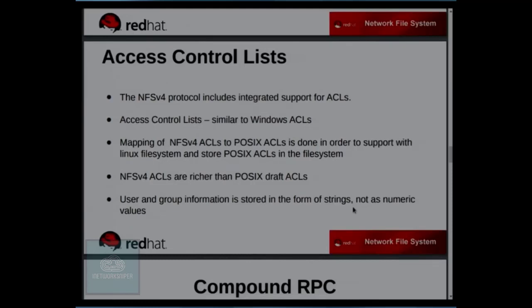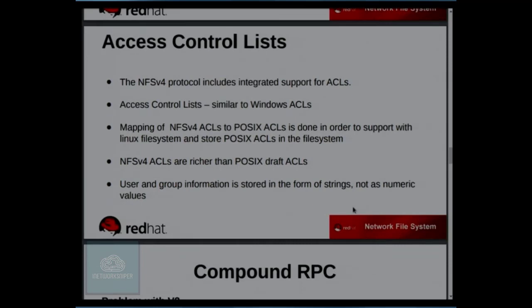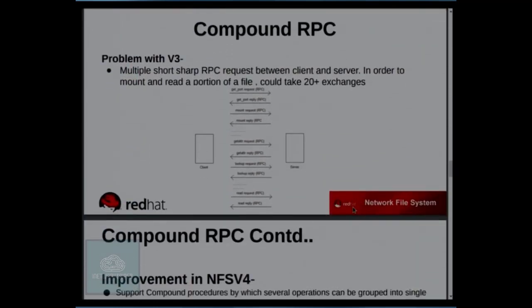ACLs are another benefit of NFS V4. NFS V3 only supports POSIX ACLs, whereas NFS V4 ACLs are much richer. All POSIX ACLs can be mapped to NFS V4 ACLs, but the vice versa is not true because NFS V4 ACLs have capabilities that cannot be mapped back to POSIX ACL. Upstream developers are currently working on fixing this. In NFS V4 ACLs, user and group information is stored as strings, not in numeric form as in POSIX ACL.